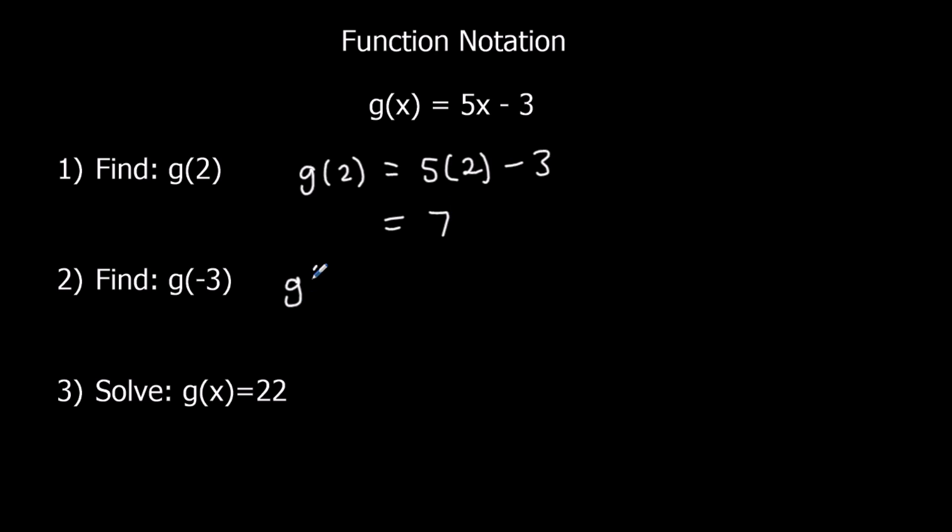g of minus 3. So the input's minus 3. 5 times minus 3, minus another 3. 5 times minus 3, 5 times 3 is 15. It's negative, so negative 15. Take away another 3. Negative 18.